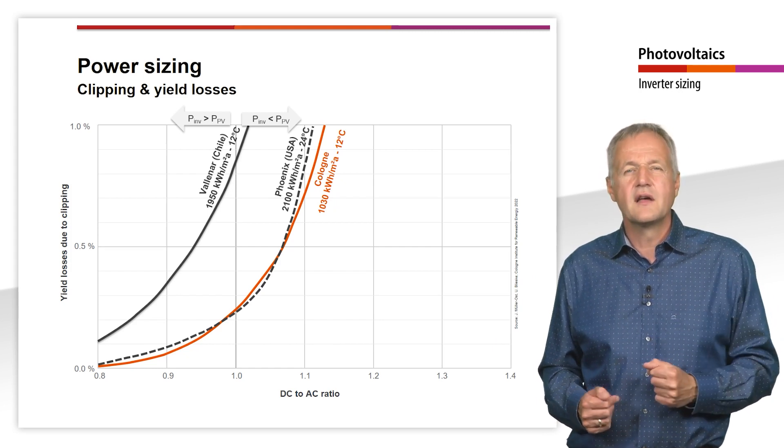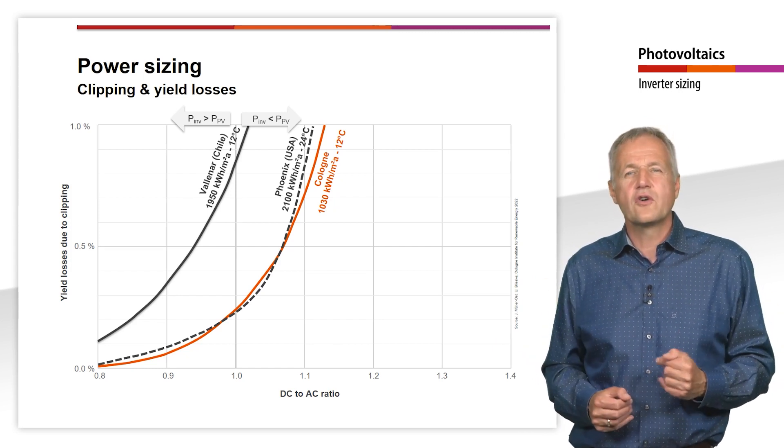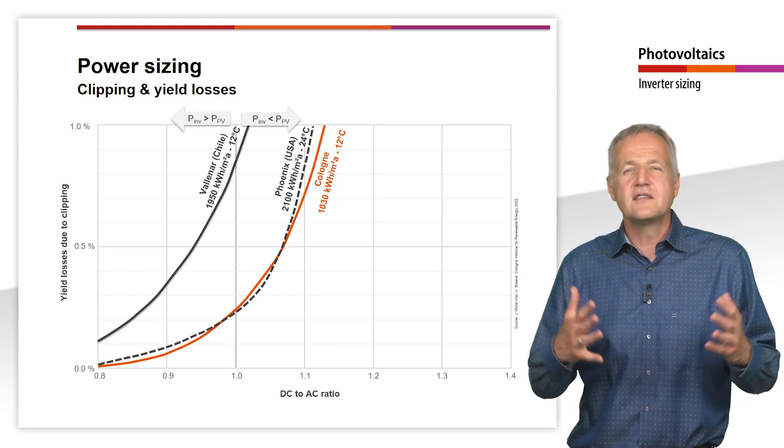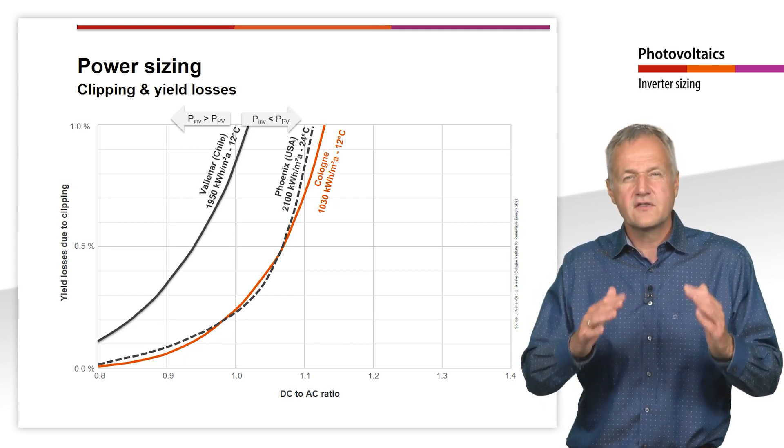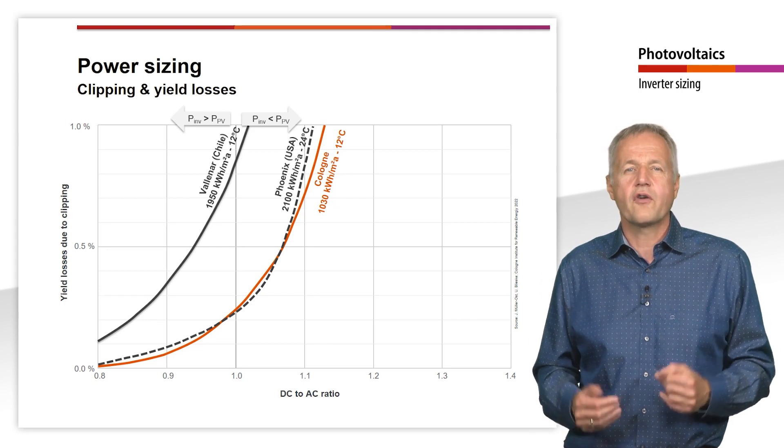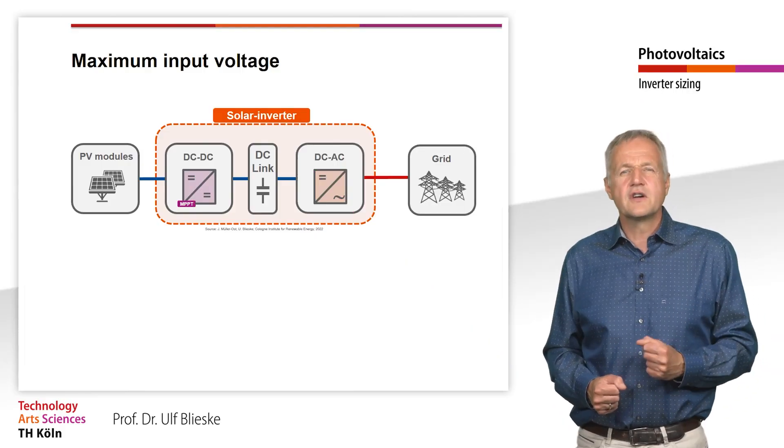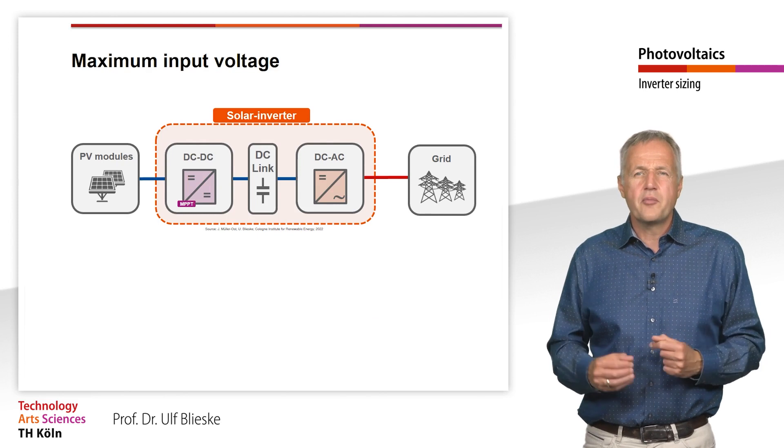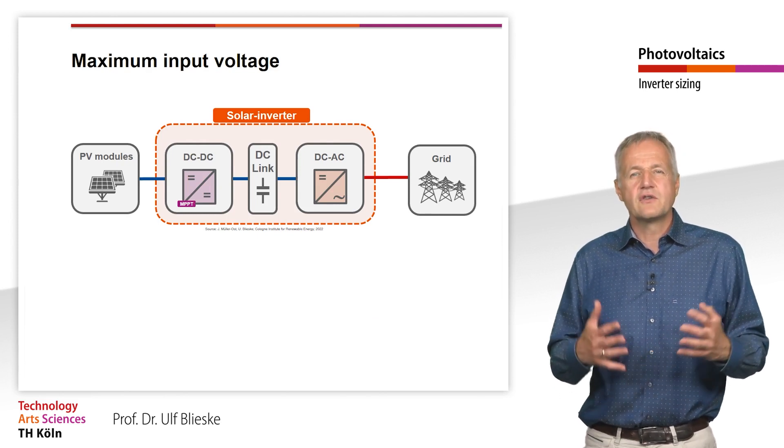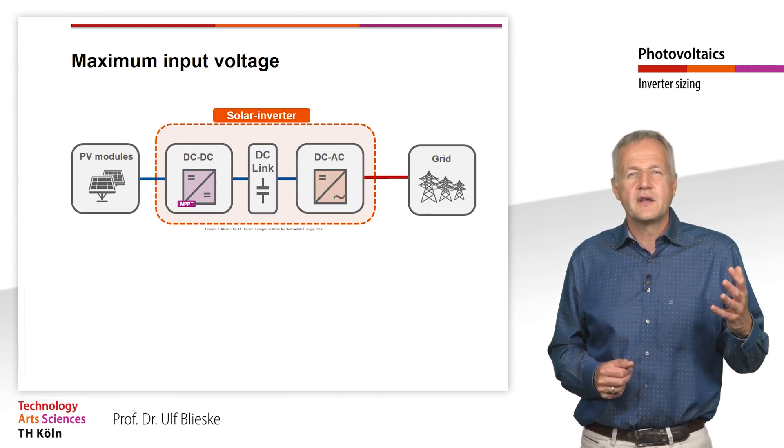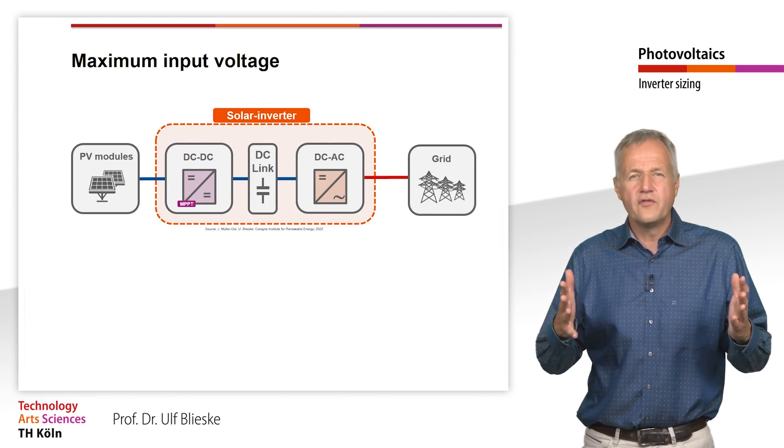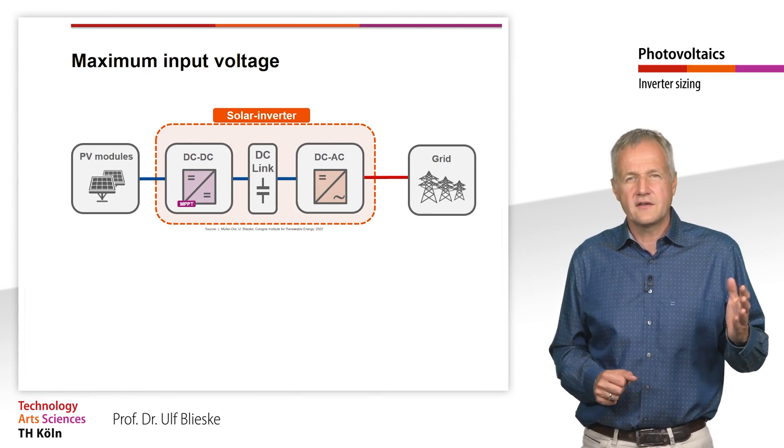As a result, high PV outputs occur less frequently and the design factor can be selected similar to the one for a system in Cologne. Whether an inverter with the appropriate rated power is actually suitable, however, now also depends on the voltages occurring at the generator.